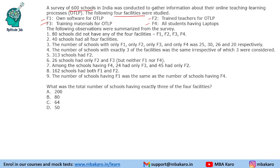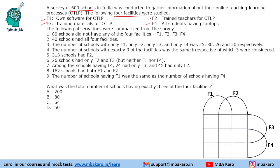So we will generate a 4-set Venn diagram with F1, F2, F3, and F4, and we will try to fill in the direct information first and then solve it. Let us begin.